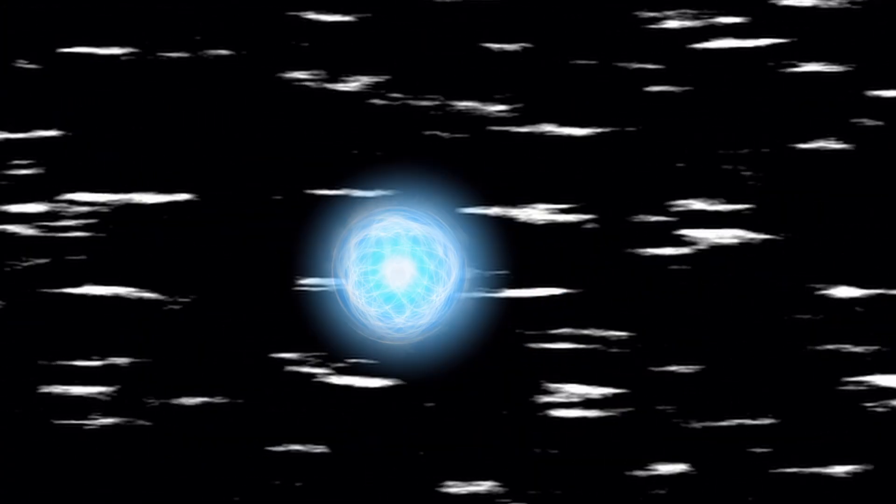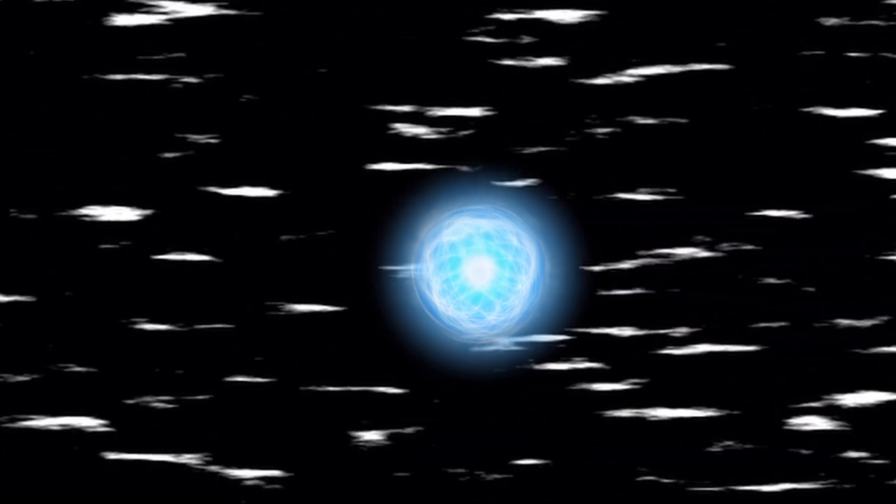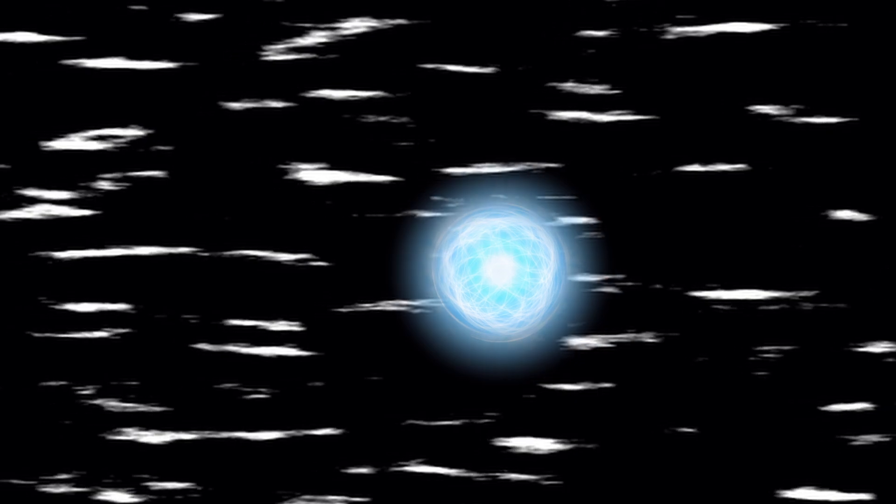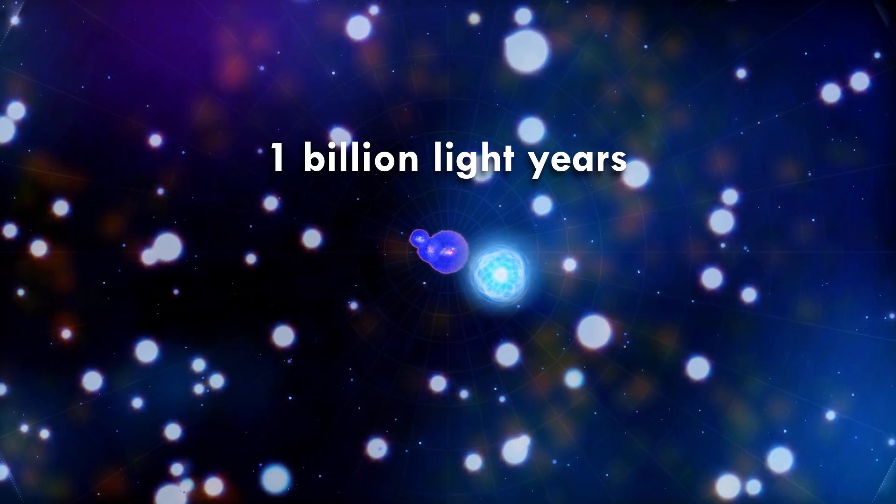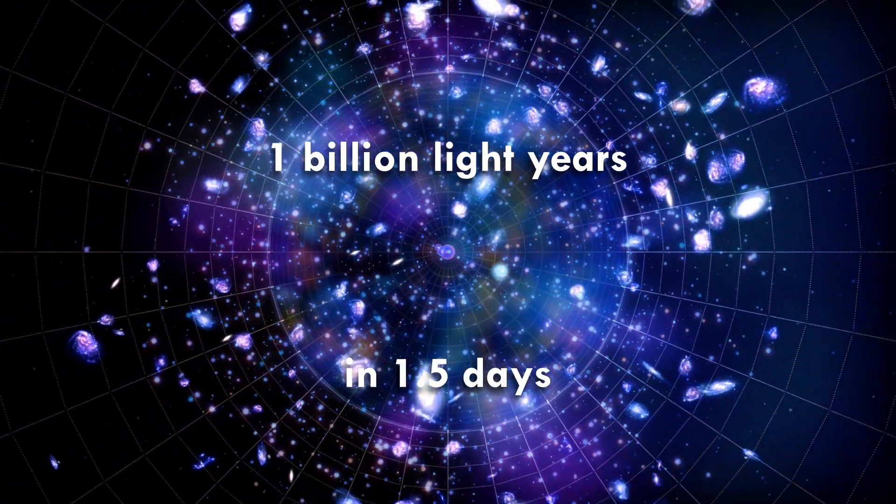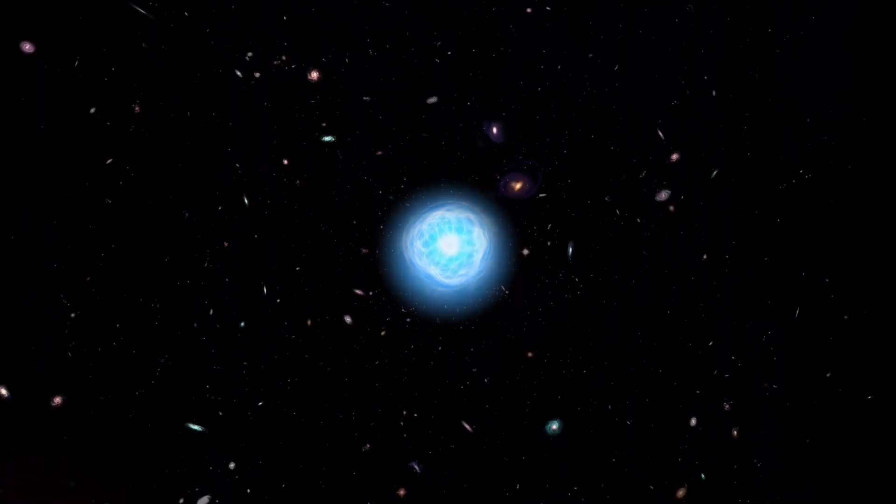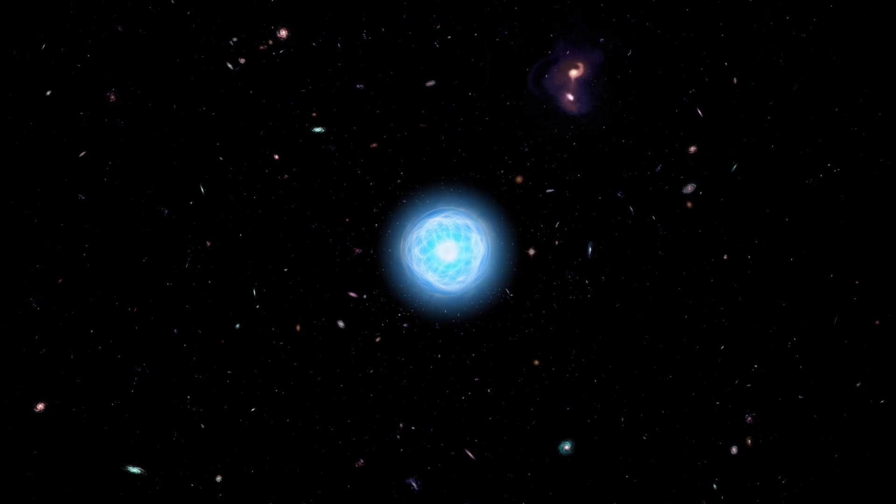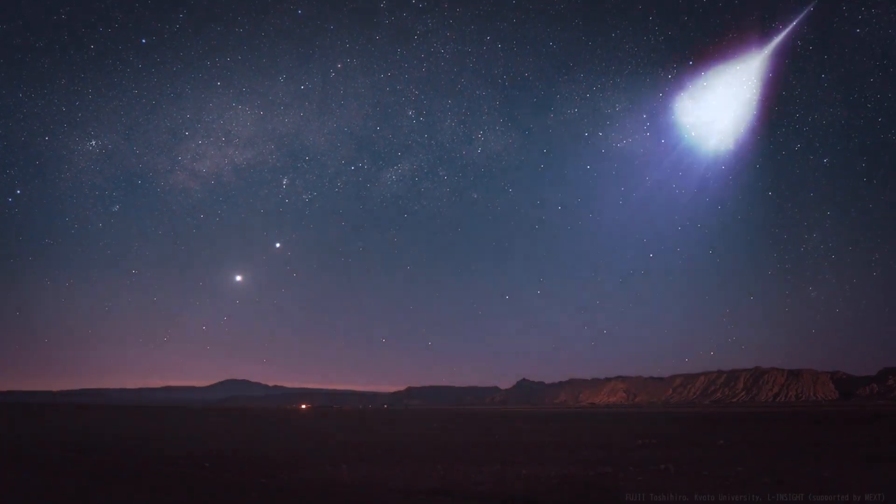Because of the instant speed this particle traveled at, it experienced an extreme version of Einsteinian time dilation. If this particle originated from a distance of 1 billion light years, it would take approximately 1.5 days in the reference frame of the particle to travel that distance. Or in simple words, if it were aware of the time travel, it was just a short trip before it hit our planet.